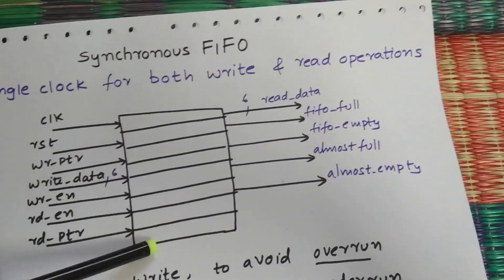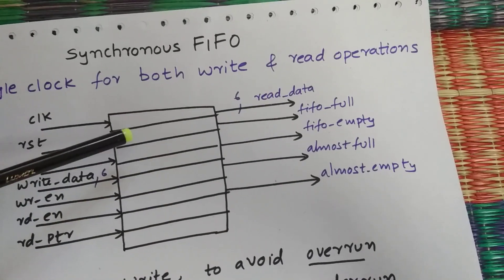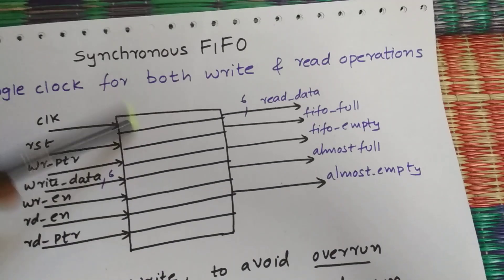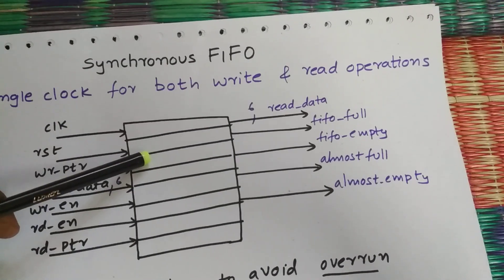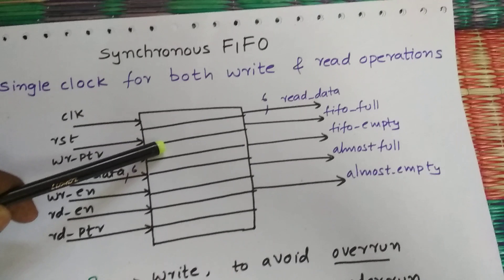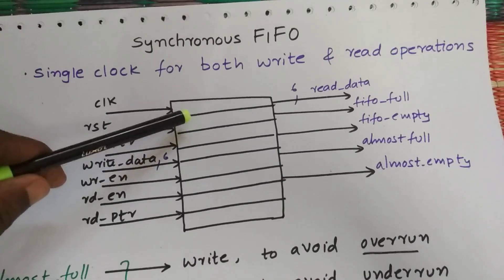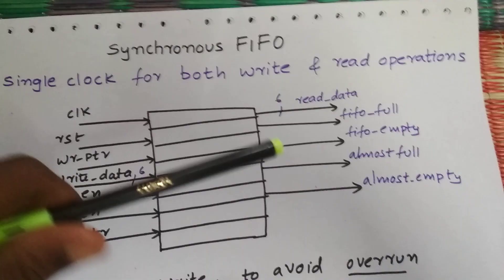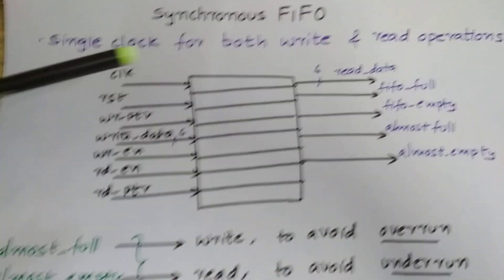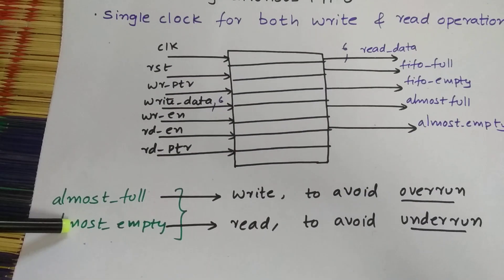If you have eight locations, if you have written up to six, then it's almost full for my condition. It's about six - you can keep it to seven, no problem. Why are we using almost full and almost empty? We are using them to avoid overrun and avoid underrun.